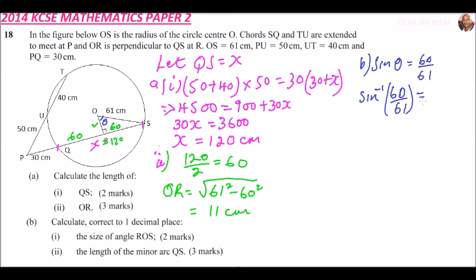You can put the bracket here. Using your calculator, you press 60 divided by 61, you get the decimal, you press inverse sin. You should be able to remember you are taught how to use a calculator in Form 3, which you should be efficient because it will help you save time. So you get 79.6 degrees. So that is angle ROS.